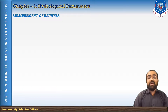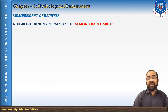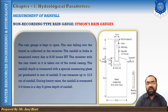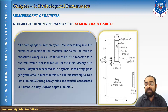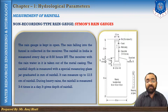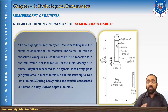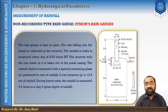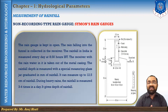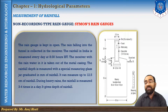We are starting with the non-recording type rain gauge — Simon's rain gauge. For the Simon's rain gauge, we have a cylindrical metal case with an internal diameter of 127 millimeters, a base of 210 millimeters, and metal casing of 600×600 millimeters. The funnel has a circular ring of 127 millimeters, while the glass tube is 75 to 100 mm in diameter. These are the dimensions of Simon's rain gauge, as already mentioned in the figure.